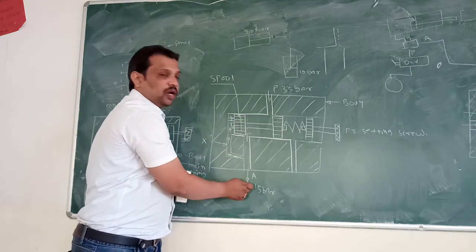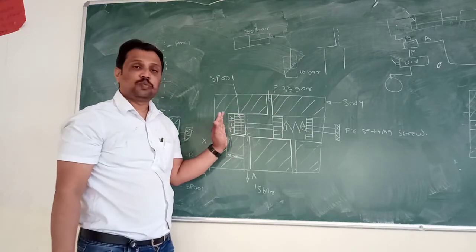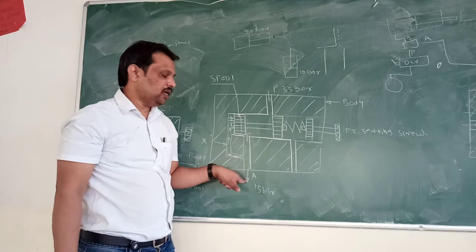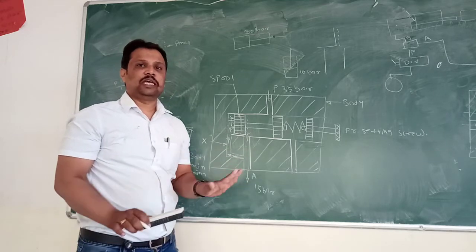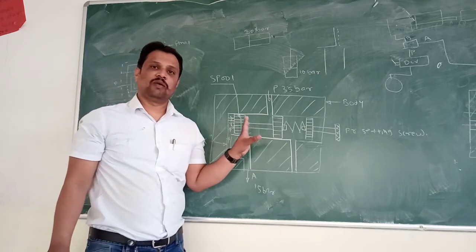And due to this blockage, your excess pressure is also blocked here and again you are getting the same pressure. If pressure rises, this spool will move towards the right and again your output pressure will be the same. There is no change in your output pressure. This is how pressure reducing valve works.